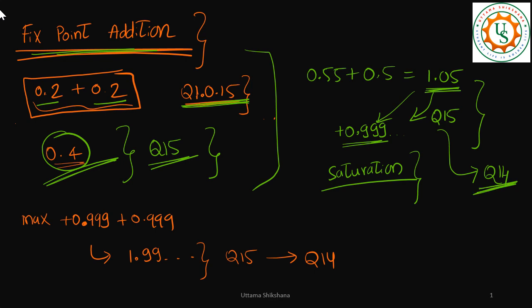Another thing is how to actually figure out what should be the output format. Of course, you're dealing with Q15, right? You take the two maximum numbers, add them, and you'll get the number. Then see in which format it can fit. I think Q14 is the right one.